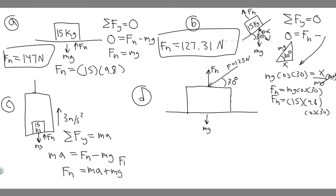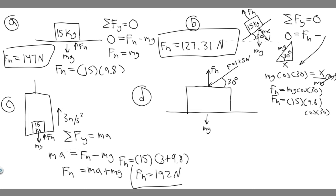Solving for F sub n: we can factor out m, so F sub n equals m times (a plus g). That's 15 times (3 plus 9.8), which gives 192 newtons. So the normal force for Part C is 192 newtons.